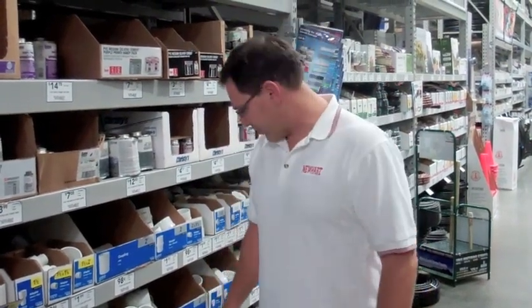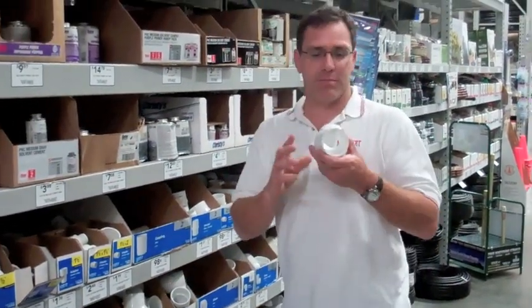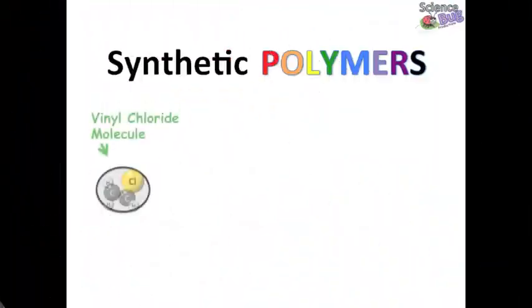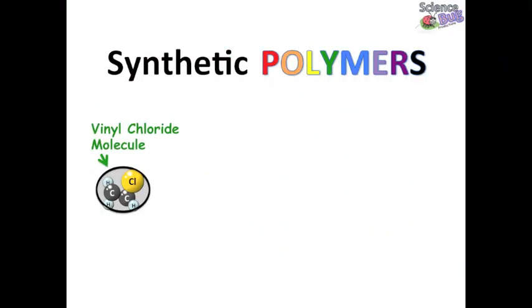A hardware store is actually a great place for examples of synthetic polymers. Take PVC for example - polyvinyl chloride. To form a PVC polymer you just need to link several vinyl chloride molecules together in a long chain.